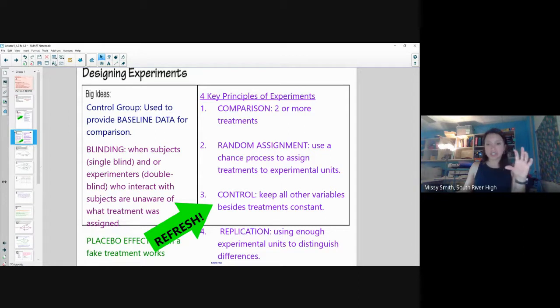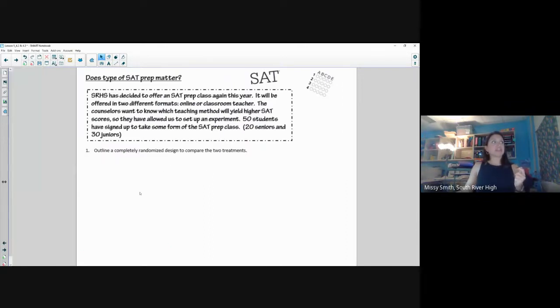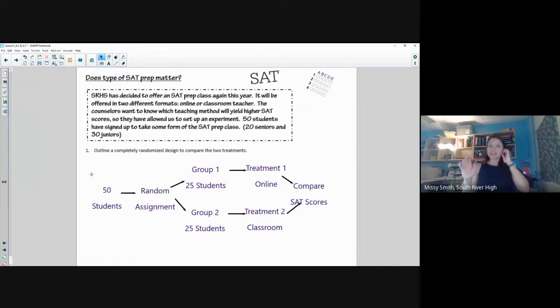Then we started to look at designing an experiment. We looked at this SAT problem where we had 50 students. A completely randomized design might look like this, where we just take the 50 students and randomly assign them to two different treatment groups. If you were writing up an FRQ and you were asked to create a completely randomized design, you would need a little more detail than what I've presented. You would have to talk about how you're going to randomize these 50 students into their two groups.